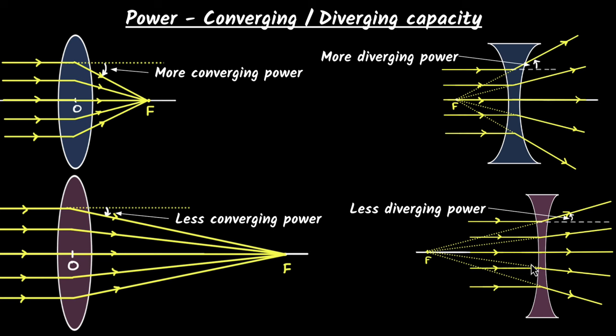And that makes sense, right? If you have a bigger converging power, they focus much more quickly. They focus much more nearer to the lens. And therefore, you'll have a shorter focal length. So shorter the focal length, more the power. And therefore, mathematically, we define power as the reciprocal of the focal length.